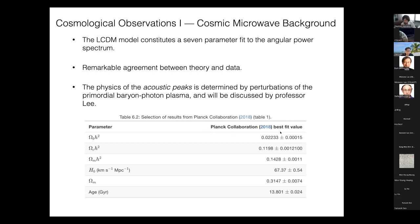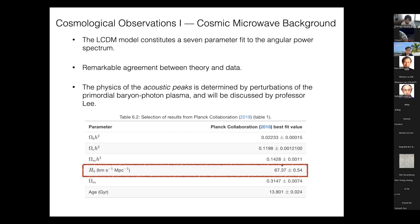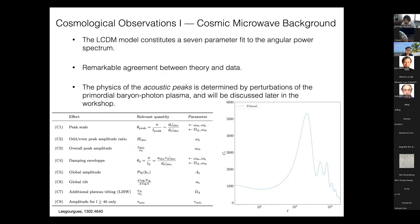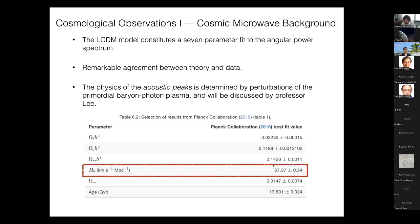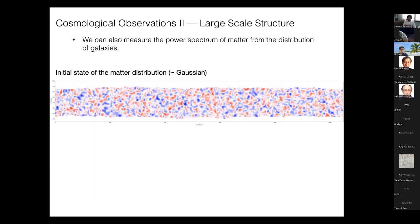The CMB is the premier cosmological data set, giving very tight constraints on cosmological parameters. I want to highlight the Hubble parameter H₀: the CMB gives a very tight constraint on H₀ because we know the distance to the last scattering surface, and changing H₀ shifts the peak positions. Assuming the standard cosmological model is correct, we know H₀ very well from the CMB. Moving on, we can also measure the power spectrum of the density field at late times by measuring the distribution of galaxies.